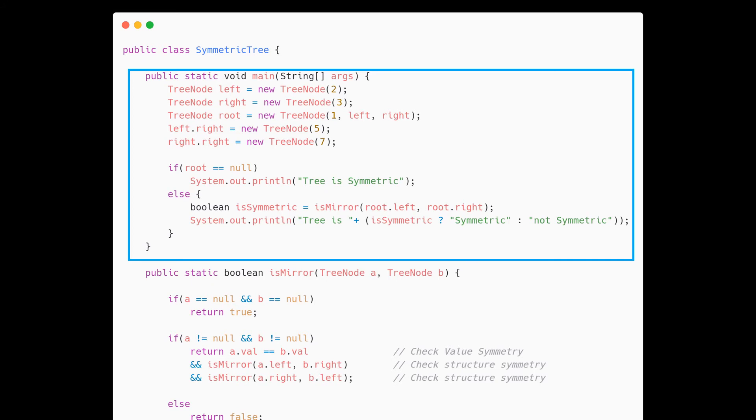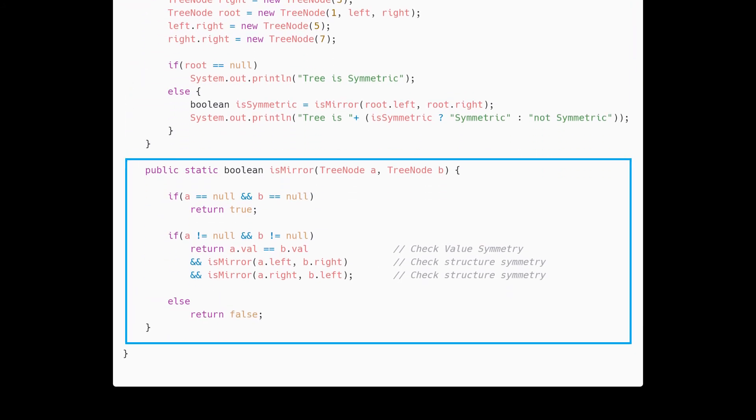The is mirror method performs basic if-else checks. Firstly, it checks if both the nodes are null or not. If yes, then these are symmetric and thus return true. Otherwise, we check if both are not null. If this is the case, we perform three checks. First is on the value equality and the second and third is a recursive call to both left and right to check the mirror property for a.left, b.right and a.right, b.left. If none of these matches, the tree is not symmetric and we return false.